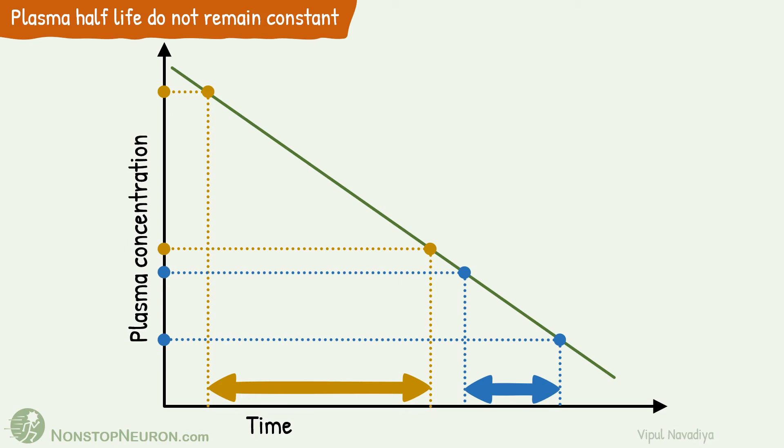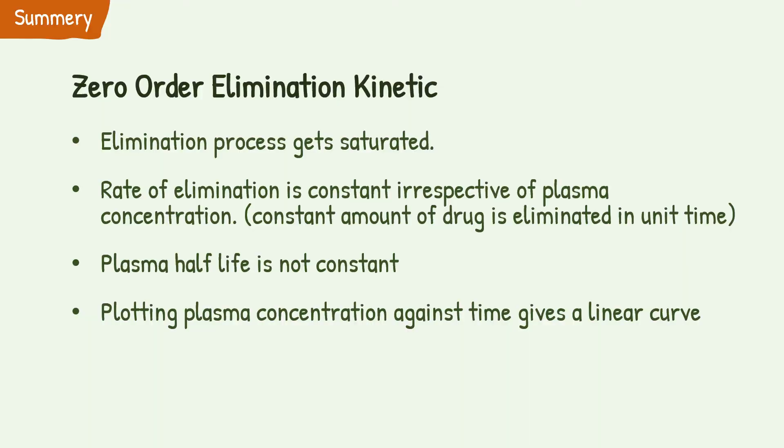This covers all the points for the video. Let's have a quick summary. Drugs follow zero-order elimination kinetics if their elimination process gets saturated. Here, rate of elimination is constant irrespective of plasma concentration, and a constant amount of drug is eliminated in unit time. Plasma half-life is not constant in zero-order kinetics. And finally, plotting plasma concentration against time gives a straight line.